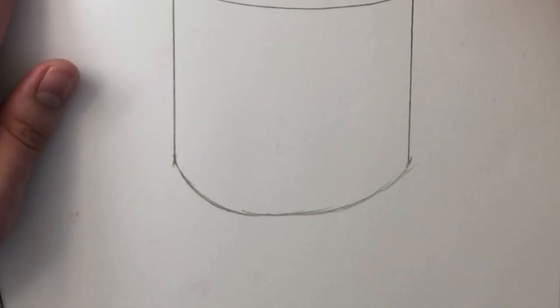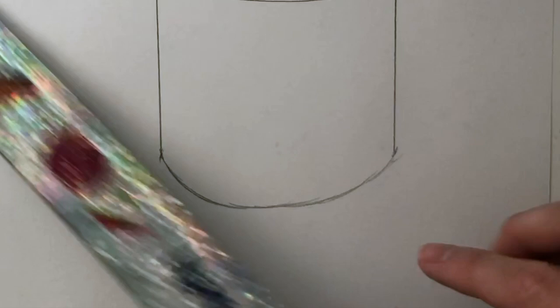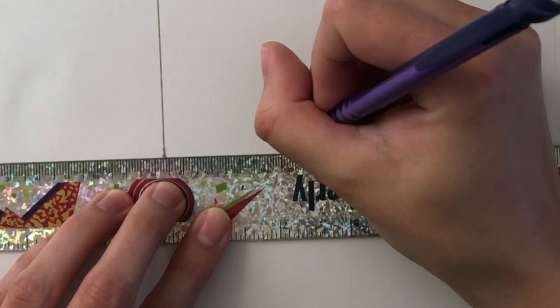Lightly draw a dot in the center of the top oval. Then use your ruler and the two bottom points where those lines meet that curve. Use your ruler, line it up, and draw a light dot near the center. Just do your best with this.